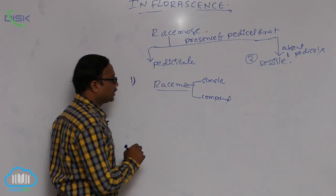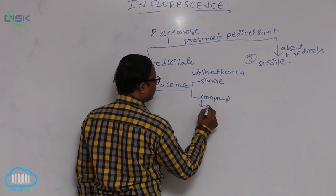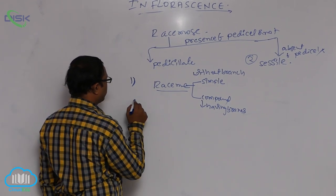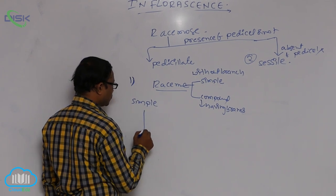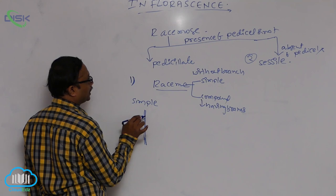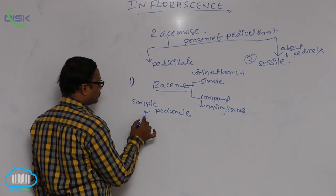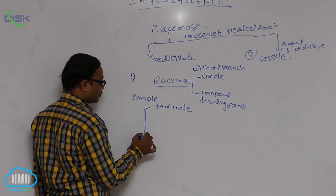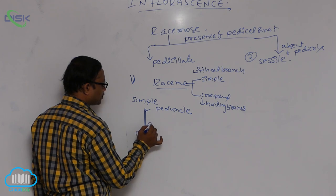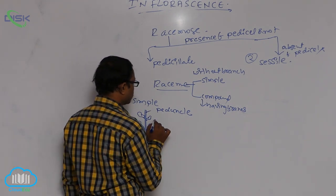Simple means without branches, and compound means having branches. In simple racymose inflorescence, the pedicel is unbranched — the floral axis is also known as the pedicel. Branches are absent on that unbranched pedicel, and pedicillate flowers are arranged in acropetal manner, meaning below is large and above is small. That is known as simple racyme.